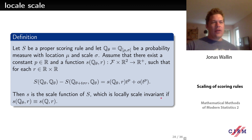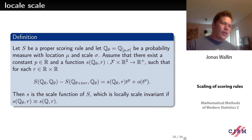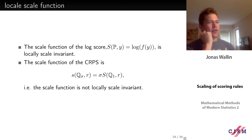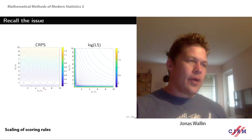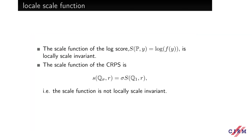We say the score is locally scale invariant if this scale function does not depend on either location or scale. It turns out the log score is locally scale invariant. However, the scale function of CRPS is locally scaled by sigma — so it is not locally scale invariant. This captures the behavior we saw: sigma_1 = 0.1, sigma_2 = 1, so errors in the second dimension are penalized much more than in the first.